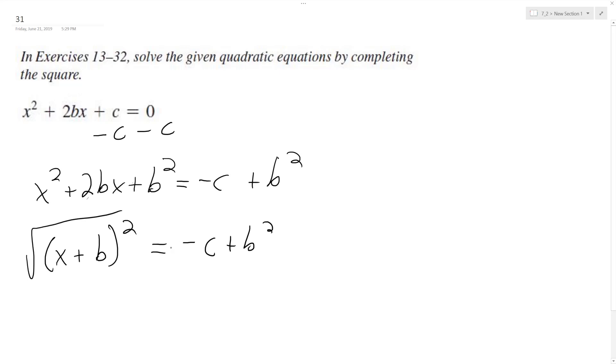Take square root of both sides. And we're left with x plus b is equal to plus or minus the square root of negative c plus b squared.